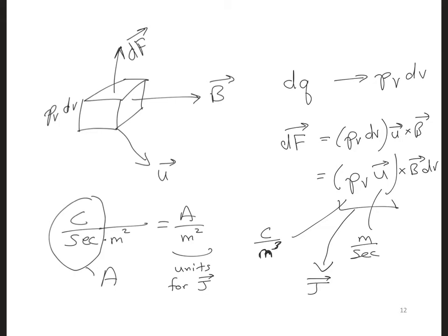Now, this is for a differential volume of moving charge. So if we were to integrate, we could get the total f on all of the charge together. We'd have to integrate over that total volume, and we would take j crossed with b dv.